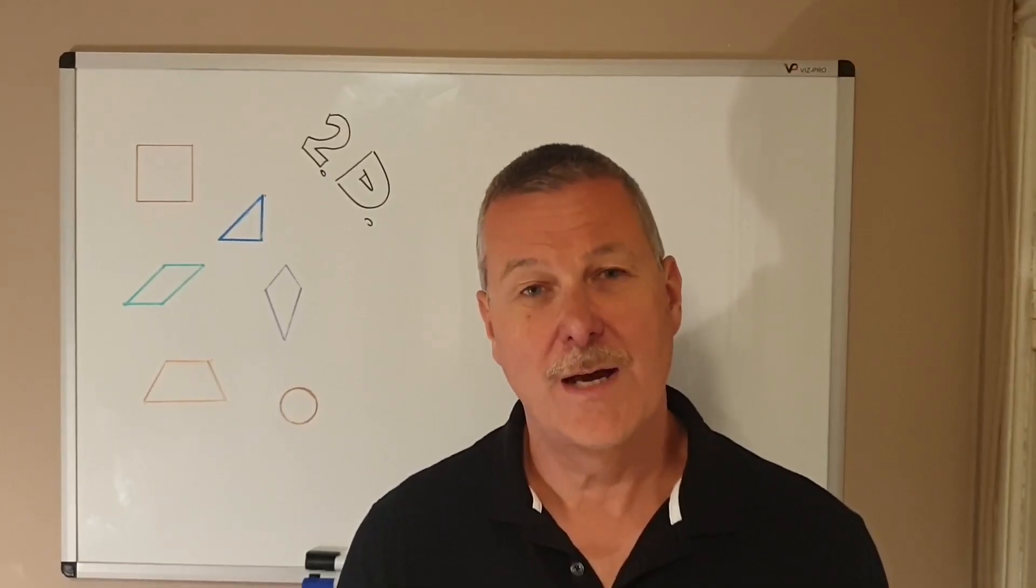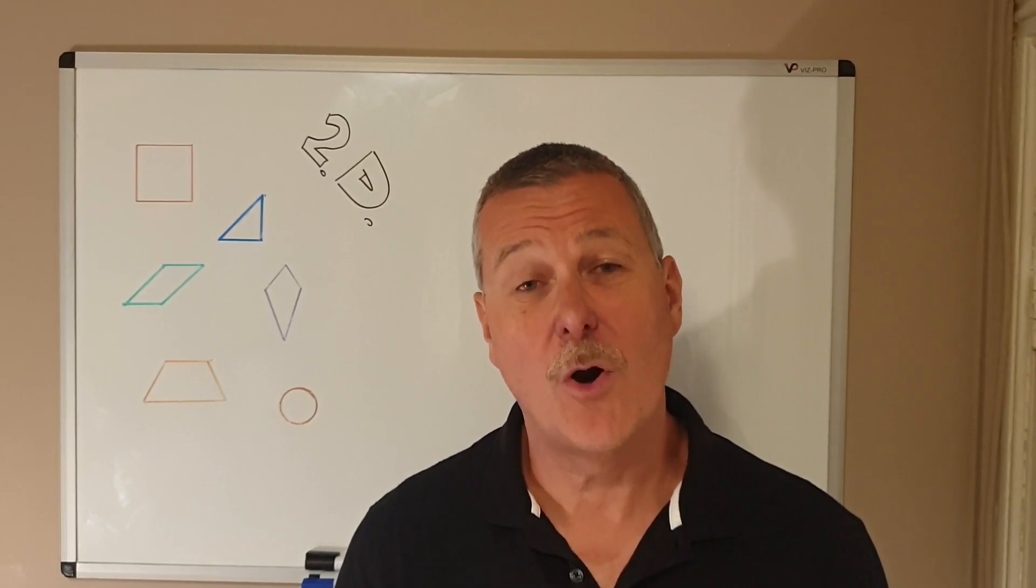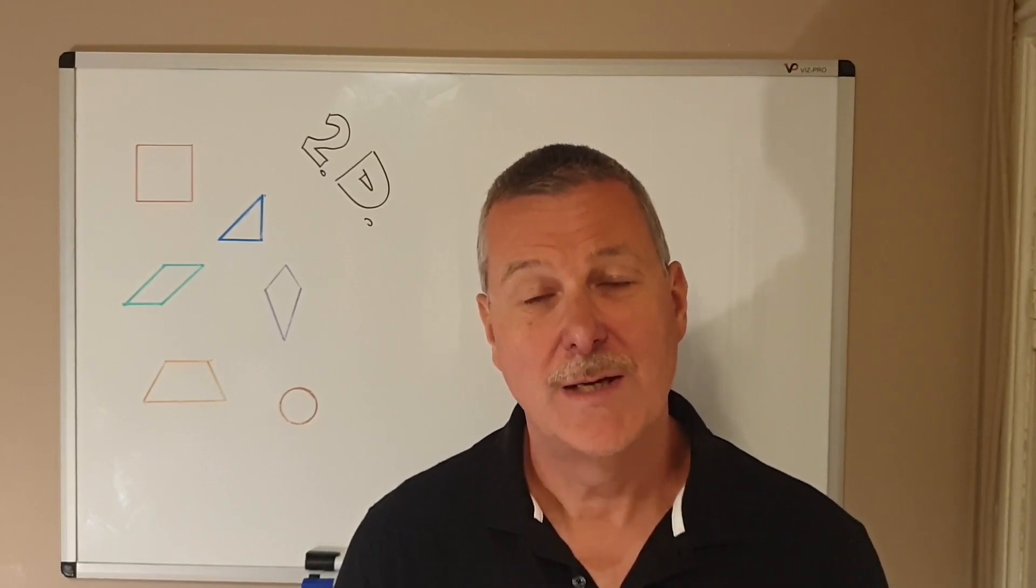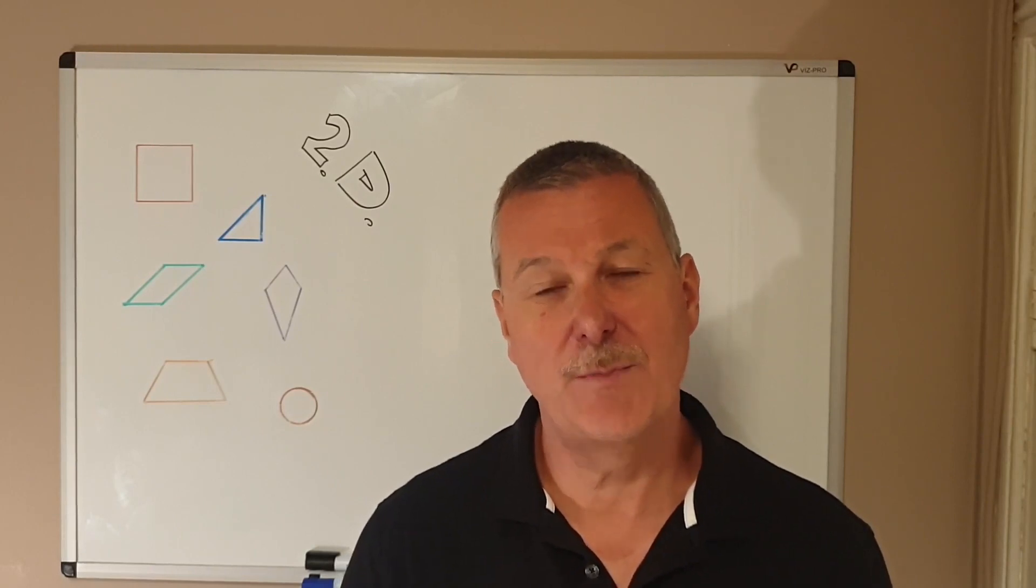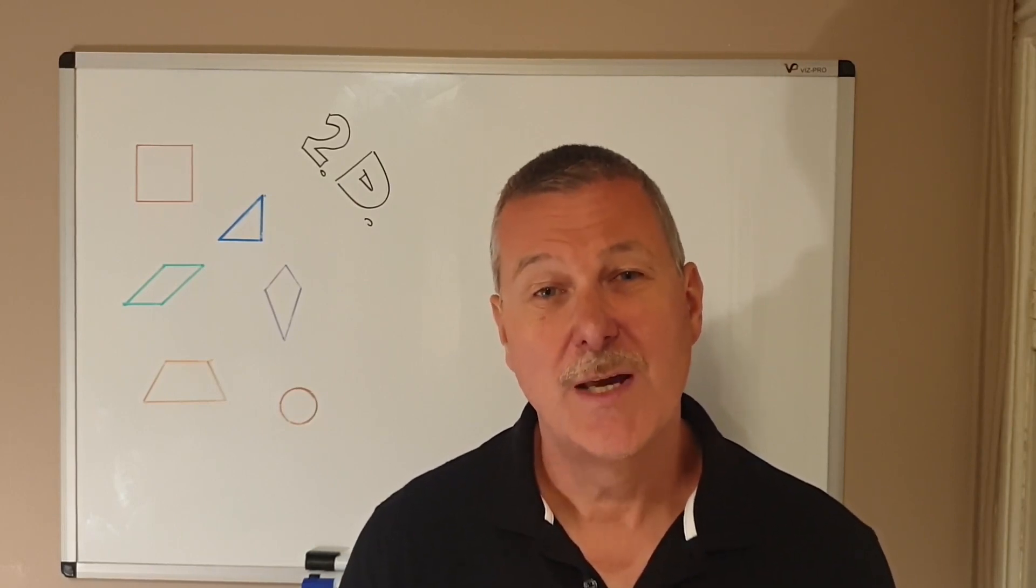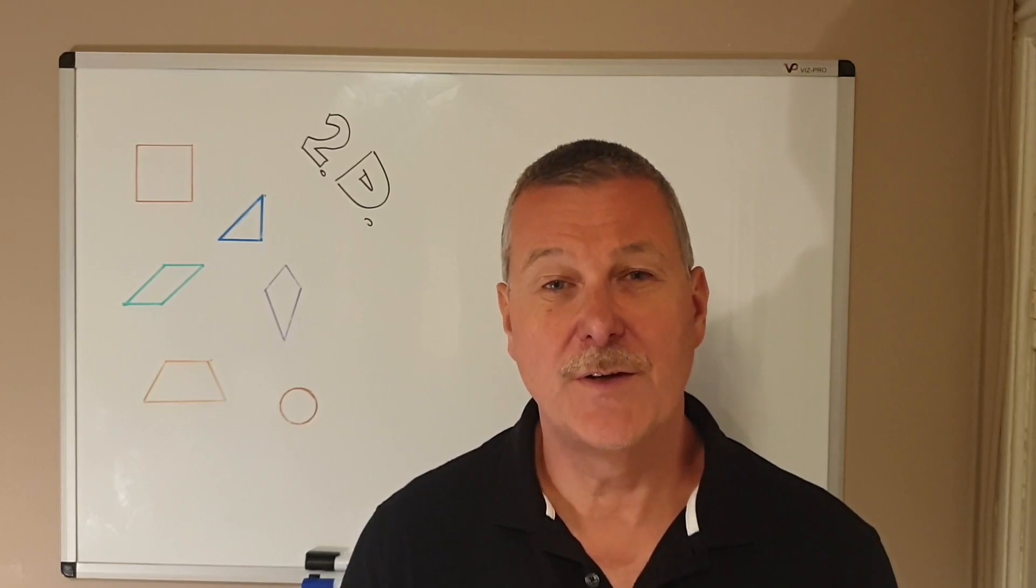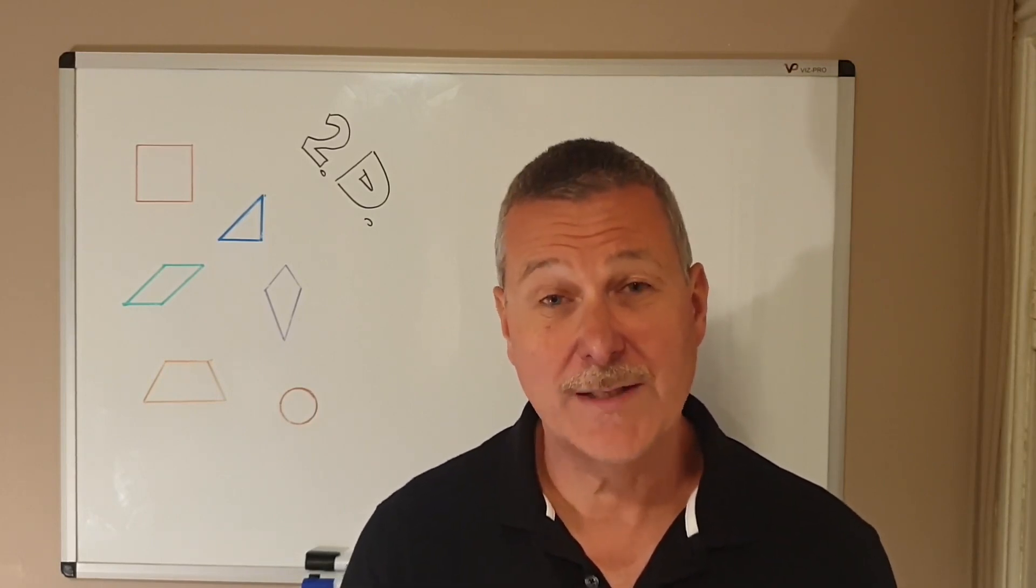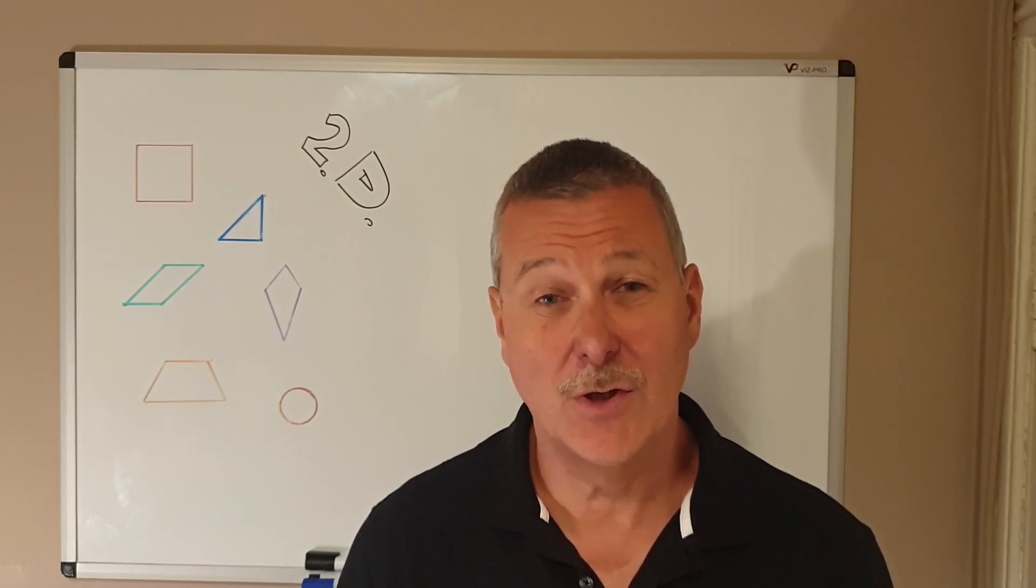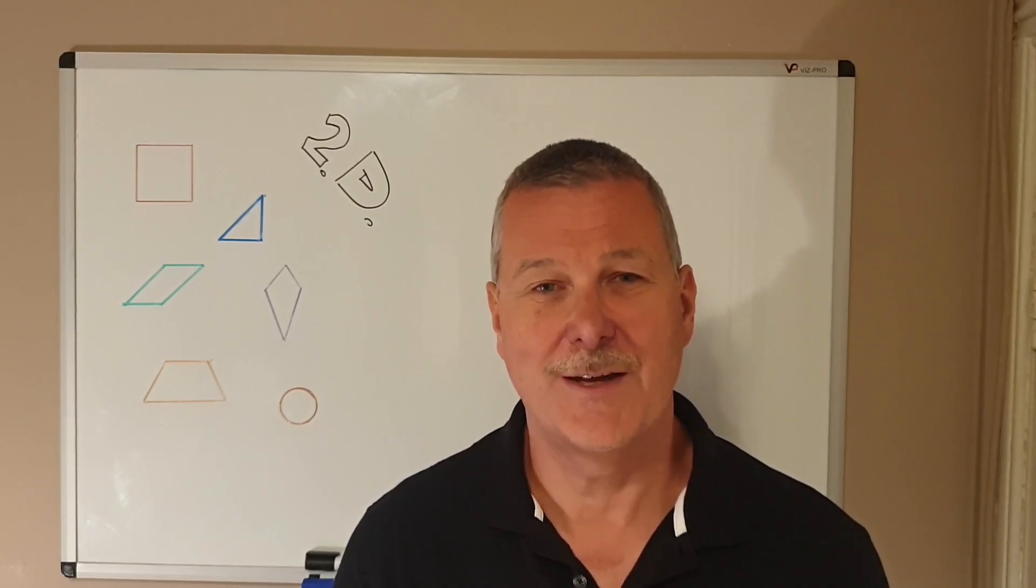So those are the properties of some of the more common two-dimensional shapes. I did mention earlier that we also look at lines of symmetry when we're considering shapes, but I've covered that in a different video, and there is a link to my side here if you want to have a look at that. We will also be looking at three-dimensional and multi-sided shapes in other videos. Thank you.